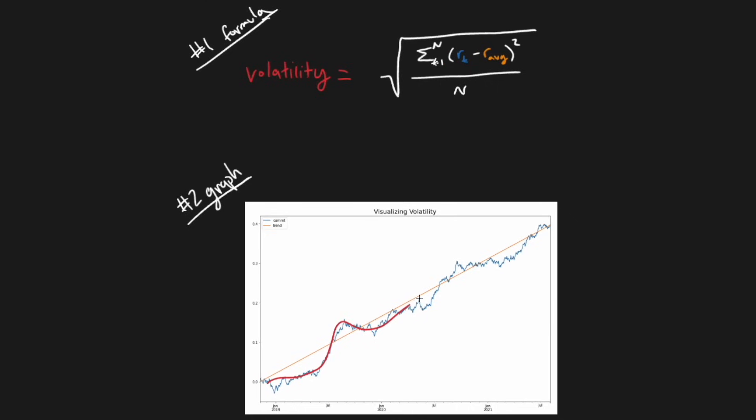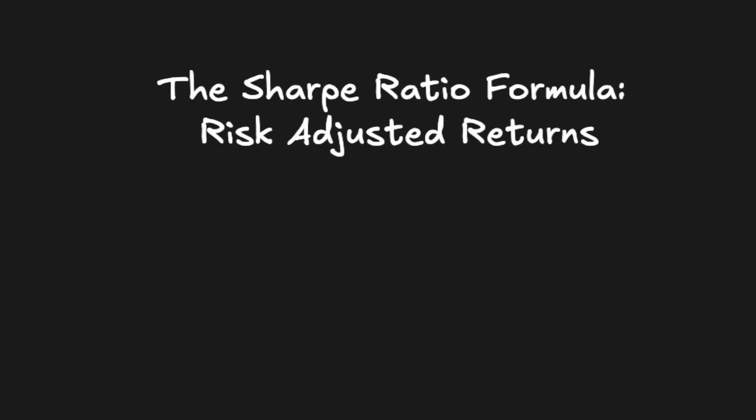What volatility measures is deviations from this trend line, represented by these red arrows. In other words, it's precisely trying to measure the wiggles in the graph that we want to capture. Now that we have our risk metric, we're ready to introduce the Sharpe ratio, which is a risk-adjusted measure of performance.